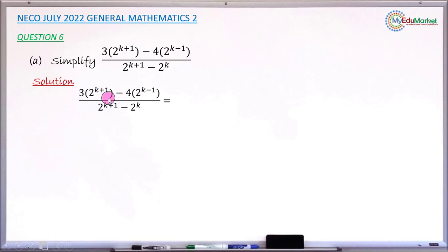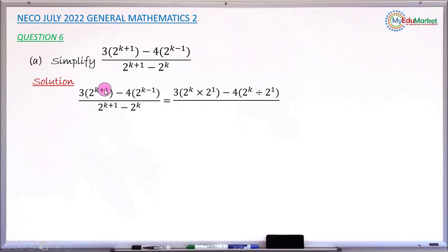Looking at the numerator, I apply the law to rewrite 2 raised to the power of k plus 1 as 2 raised to the power of k multiplied by 2 raised to the power of 1 — these are exactly the same thing. Similarly, the second bracket contains 2 raised to the power of k minus 1. Subtraction of the power means dividing two indexed numbers with the same base, so 2 raised to the power of k minus 1 is 2 raised to k divided by 2 raised to 1.